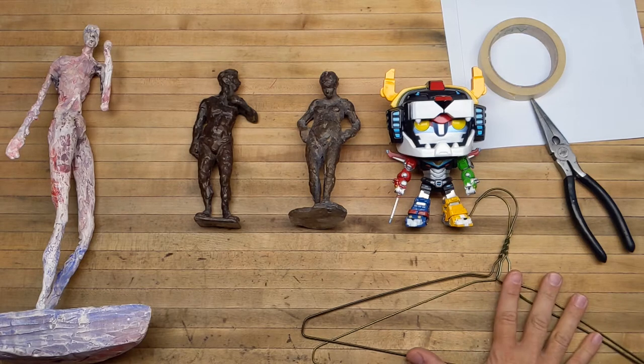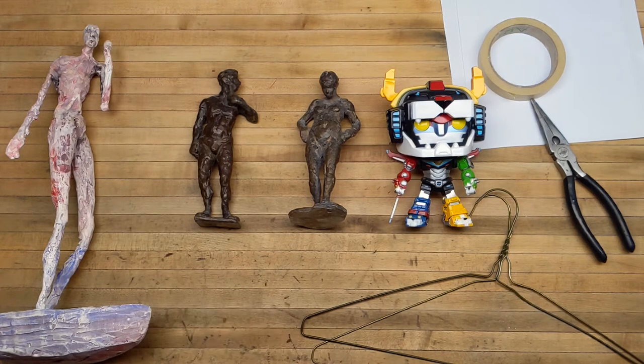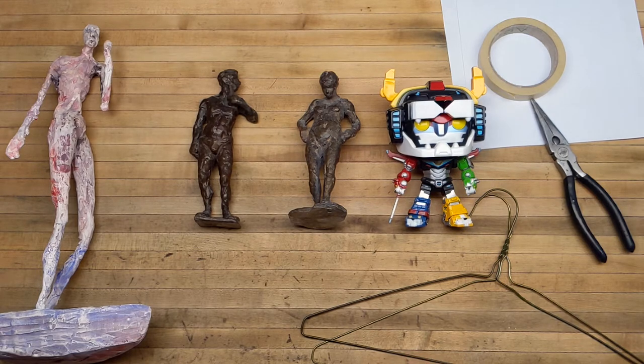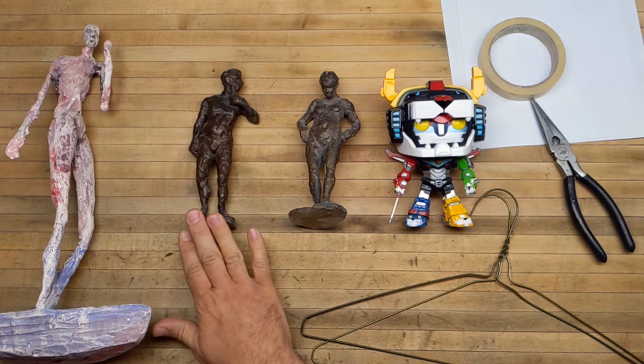I've got my hangers here and I'm going to build my armature for this figure. We're going to play around a little bit with abstraction - we're making a human figure so it's going to be figurative, but when you abstract something you simplify, stylize, or distort.